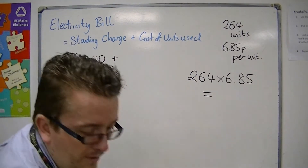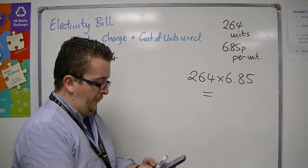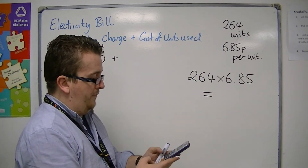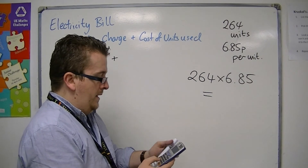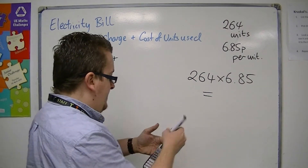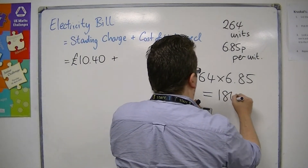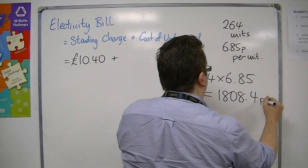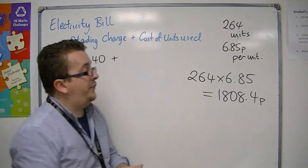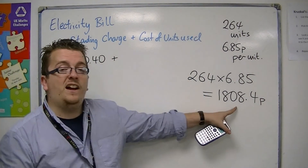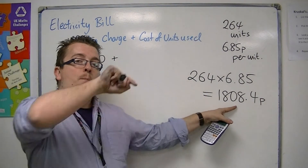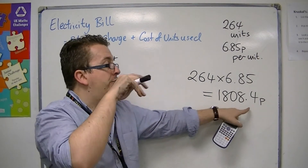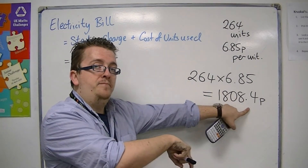So we do that on our calculator. 264 times 6.85 is 1808.4 pence. So we can see that this is 1808.4 pence — we've got this 0.4 of a penny.